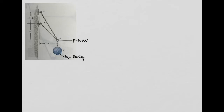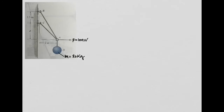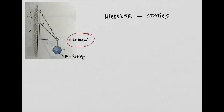Let's start with this example in two dimensions. I took this example from Hibbeler's book on statics. This is a two-dimensional problem. The question is: you have a force of 100 newtons — a horizontal force at point A — and also at point A you have a mass of 20 kilograms.